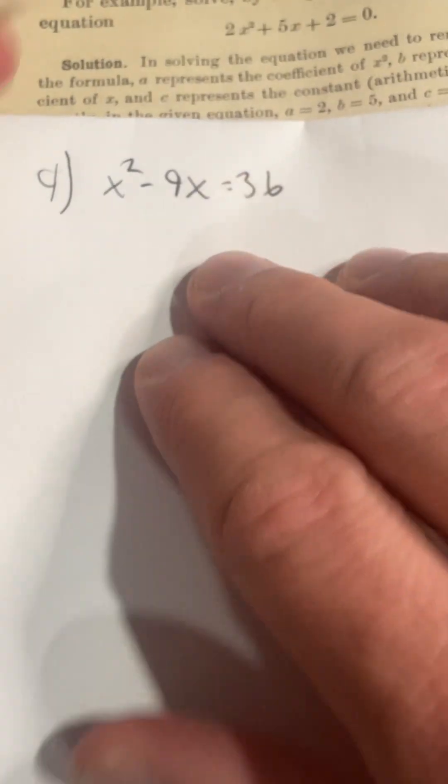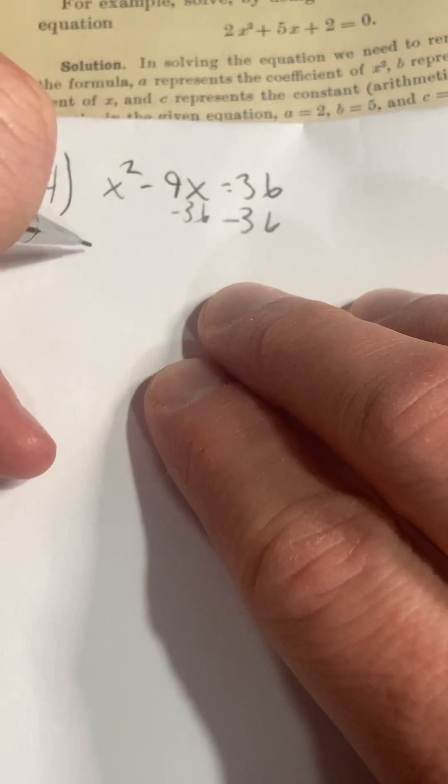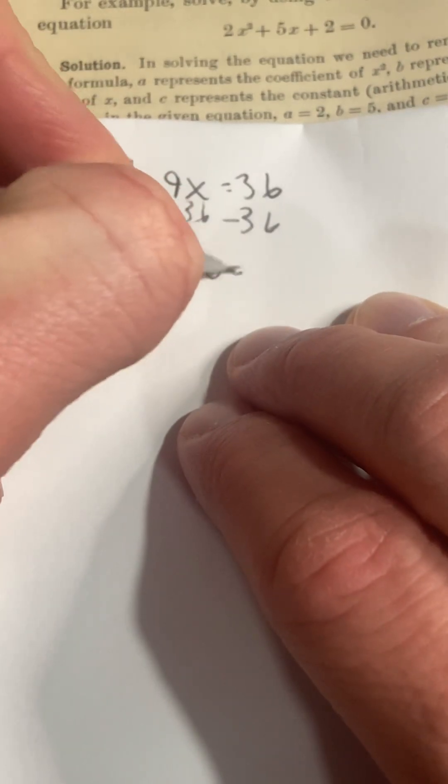So let's go ahead and do that. I have x squared minus 9x equals 36 so I'm going to subtract 36 from both sides. So I get x squared minus 9x minus 36 equal to 0.